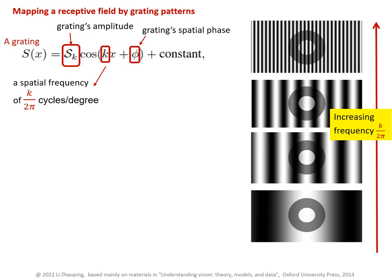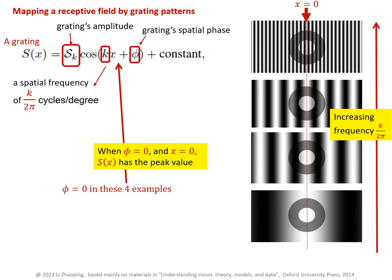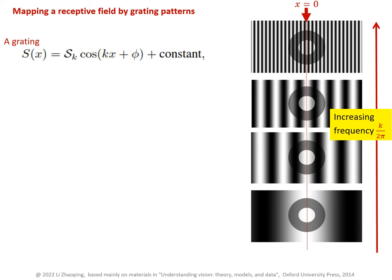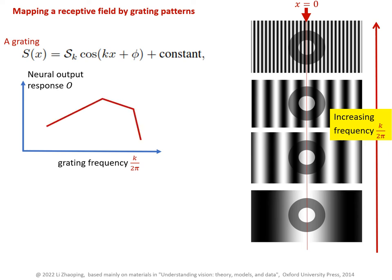This φ is the spatial phase of the grating. So if the spatial center of the receptive field is at location x = 0, then all these four example gratings have their phase angle φ = 0, since the peak or brightest parts of the gratings are at the center of the receptive field. So if we plot the neural response output O as a function of the spatial frequency of the grating, we should see something like this. The peak response occurs at an optimal frequency of the grating. This is when the grating stripes are just wide enough so that roughly they are about the size of the center of the receptive field.